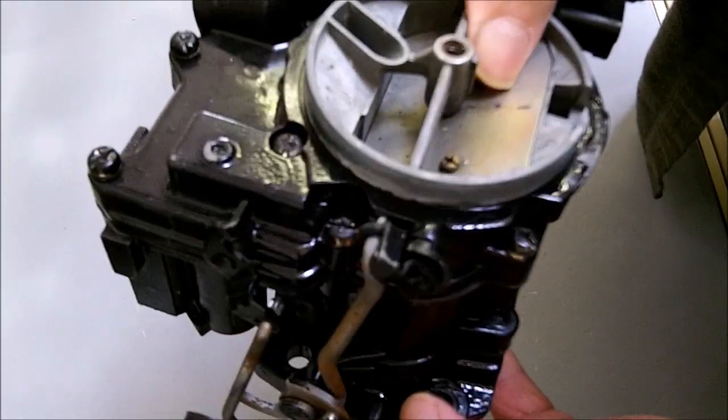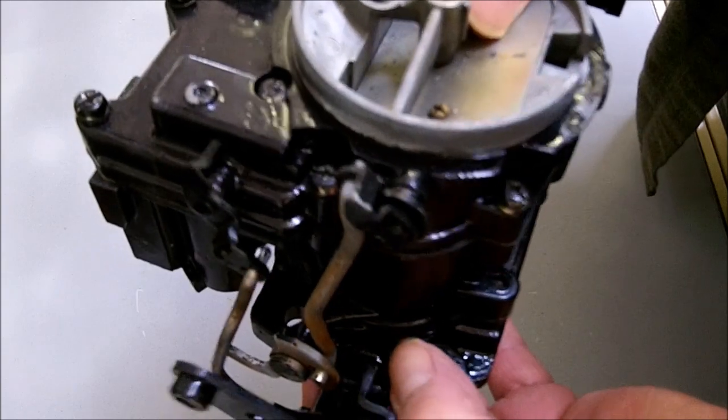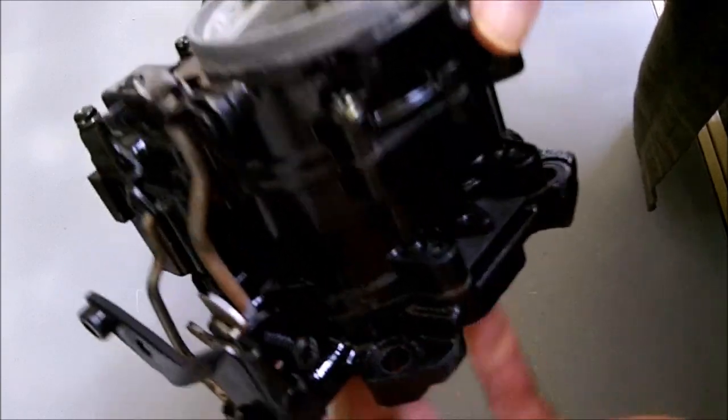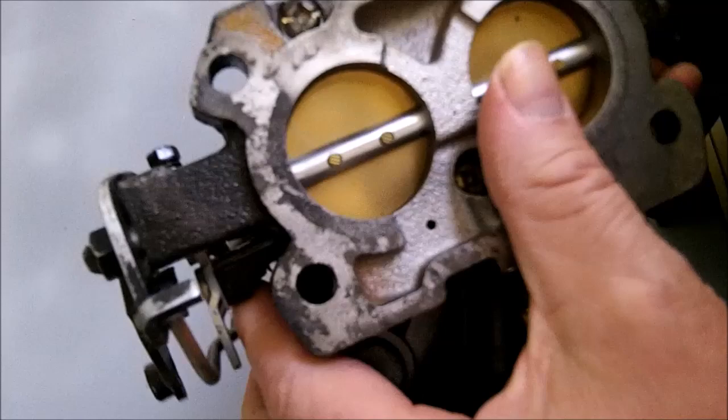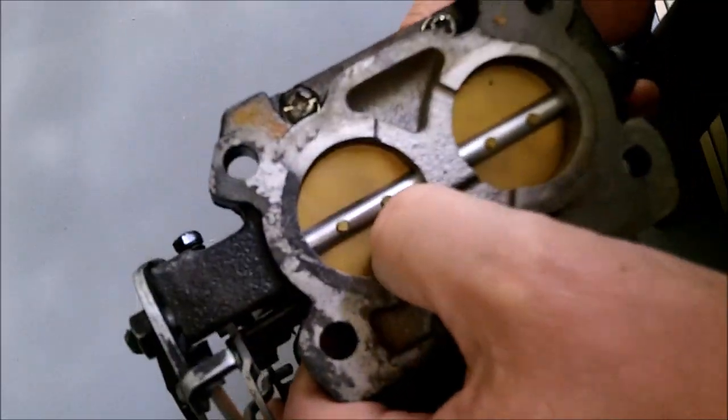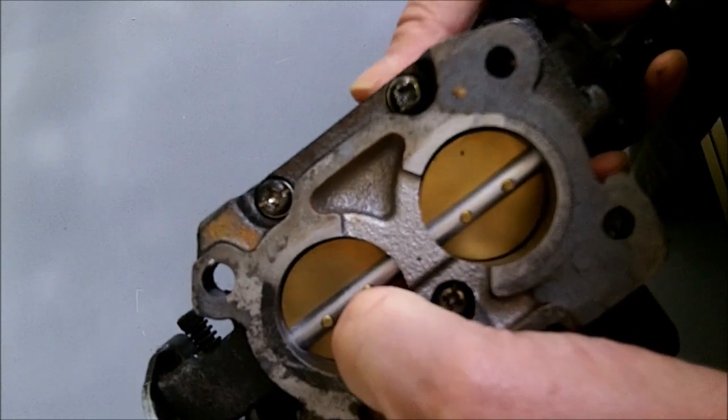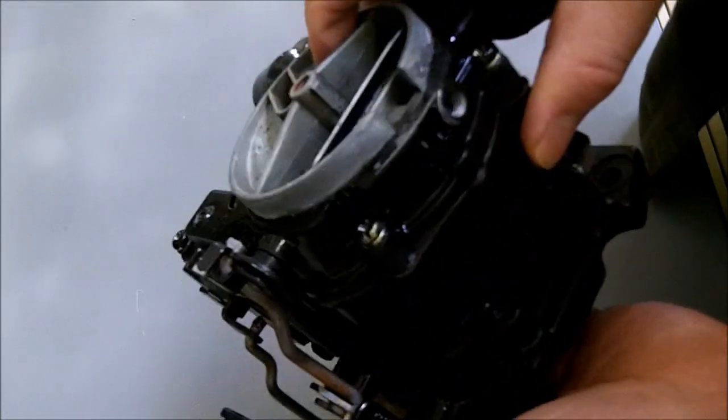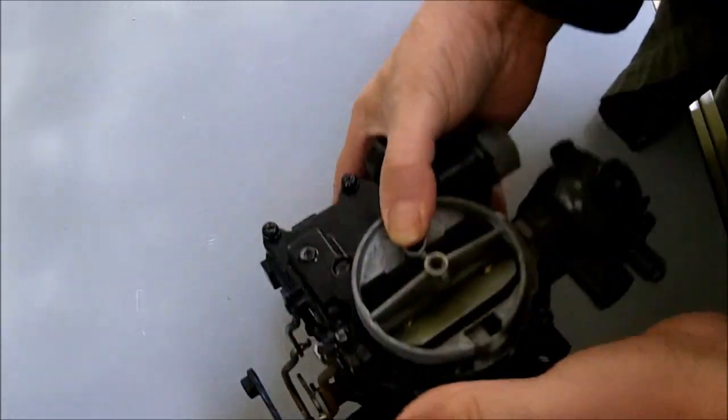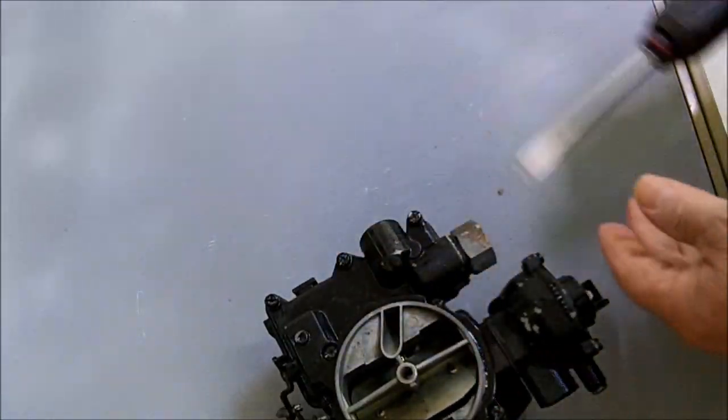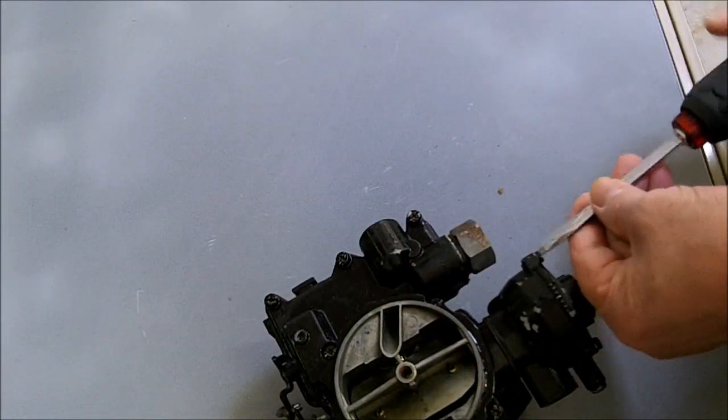And opens up the idle screw a little bit, pushes it back, and what it'll do is just open the throttle slightly. That's what makes the idle faster. I think all Mercarbs have the electric choke on it.